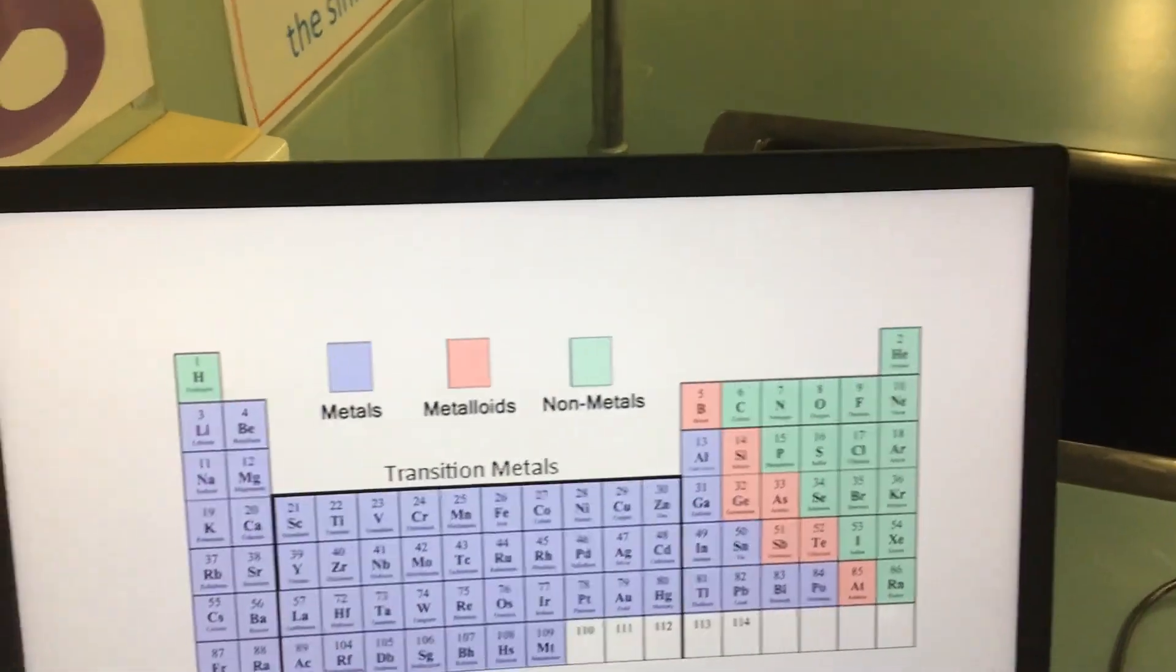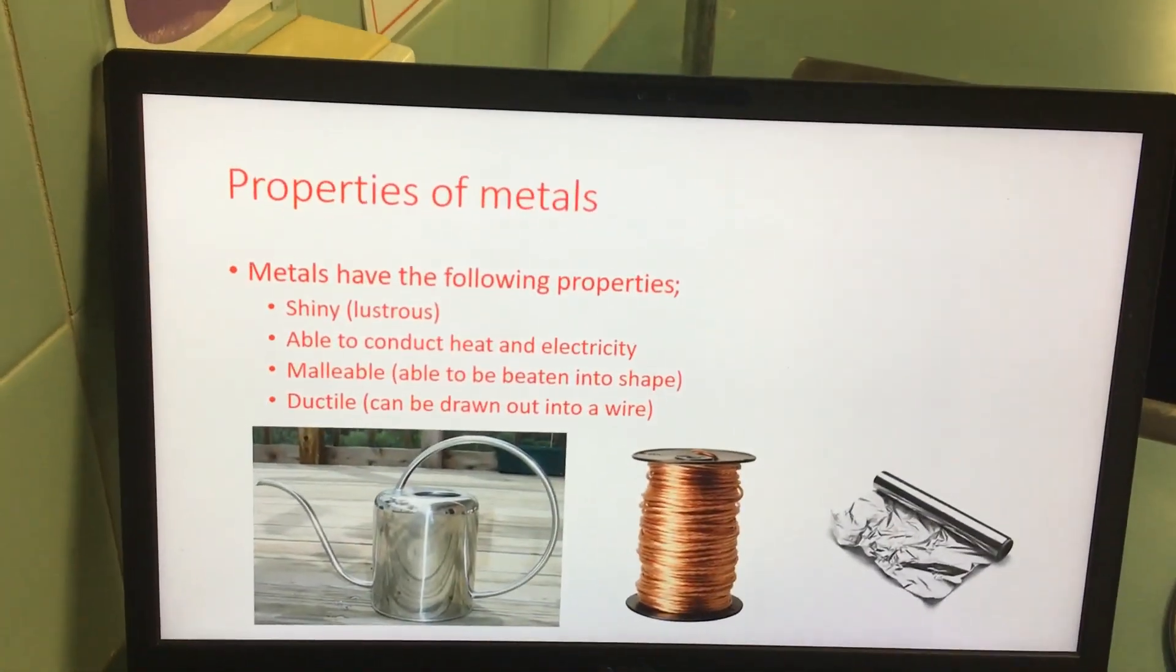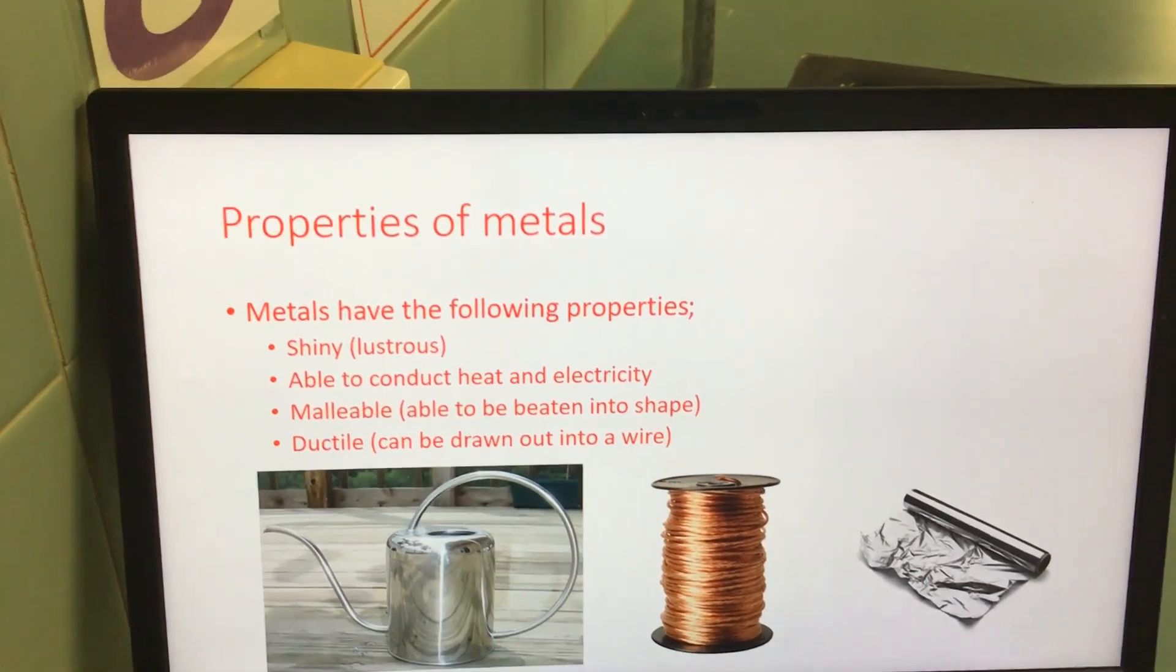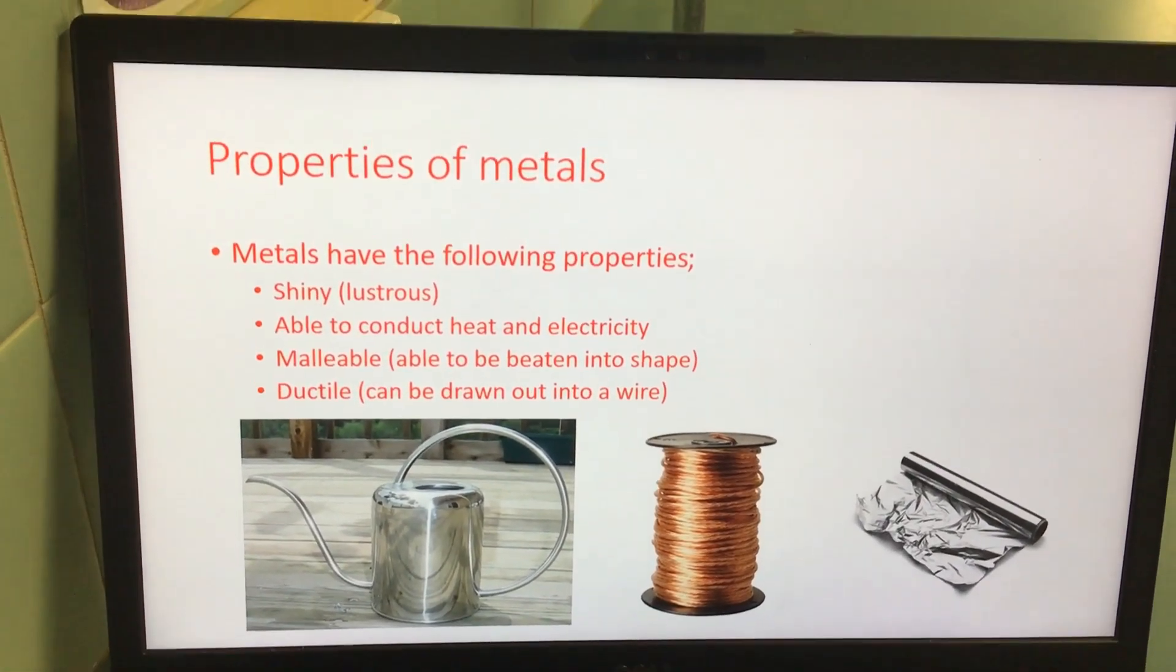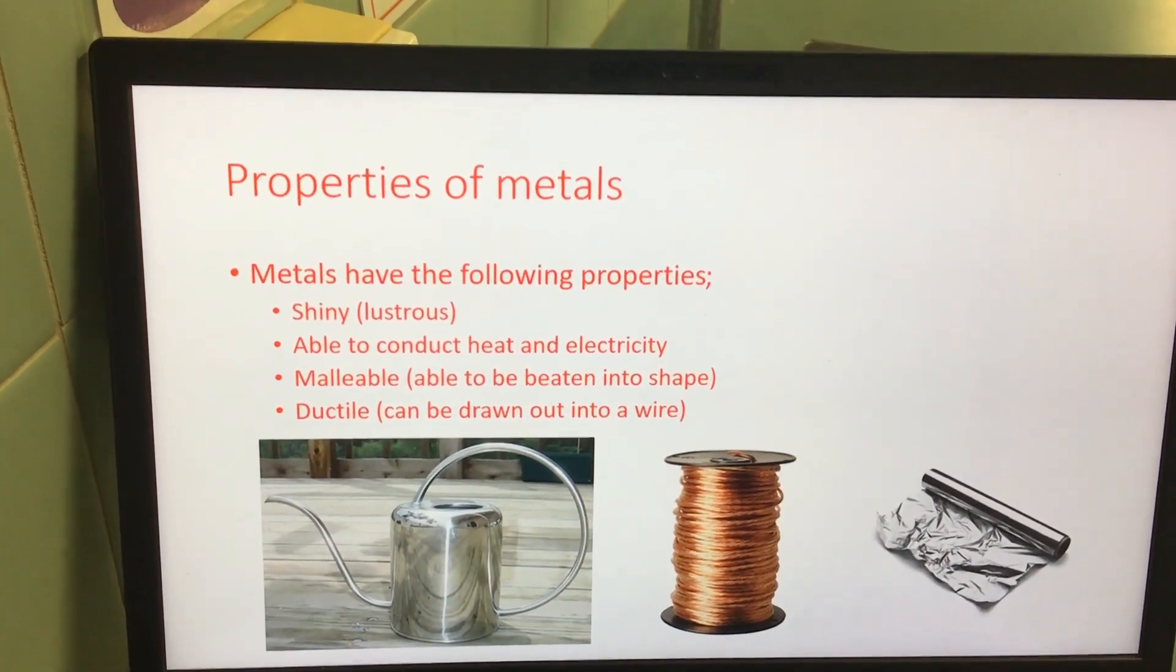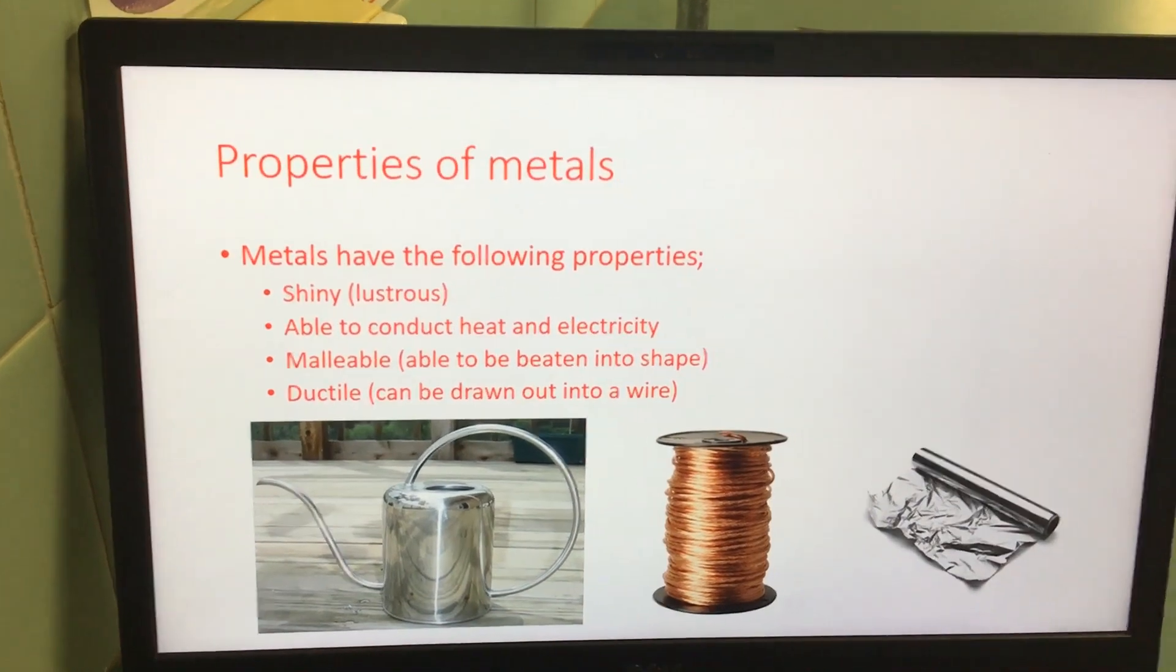So what makes a metal? Properties of metals: well they're shiny, they're lustrous, they're able to conduct heat and electricity, they're malleable, which means they're able to be beaten into shape, and they're also ductile, can be drawn out into a wire.